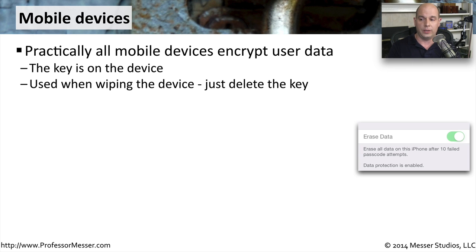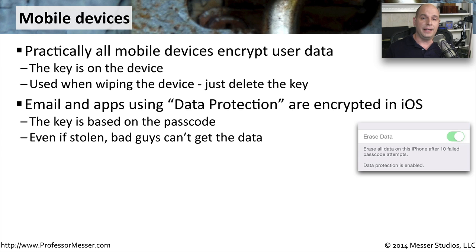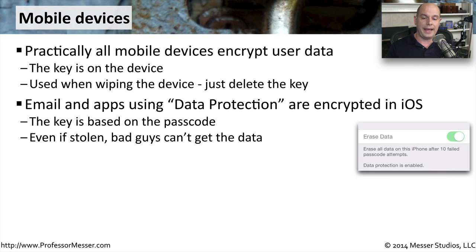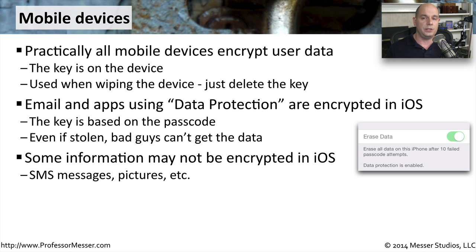If you're using an iOS device like an iPhone or iPad, a lot of this data may already be encrypted using something Apple calls data protection. If you look into the configuration of your device and have enabled a passcode, you'll see a note that says data protection is enabled. This means that if your mobile device is stolen, they would need that passcode to access the data. Not everything on your iOS device will be encrypted using this method — things like SMS messages or pictures are not generally encrypted — so you can't be assured that everything on the mobile device will be encrypted, just some of the most important information.